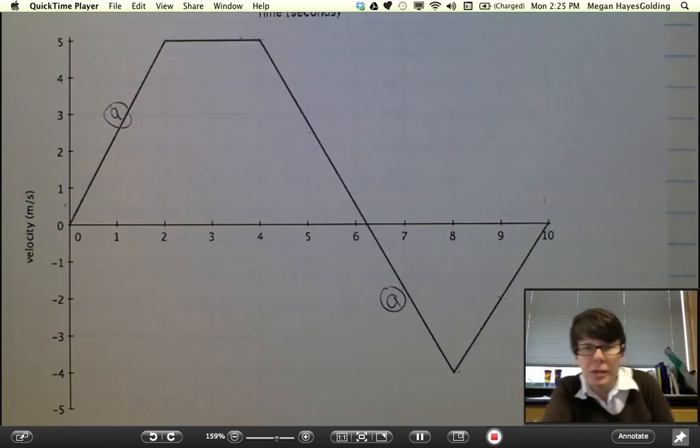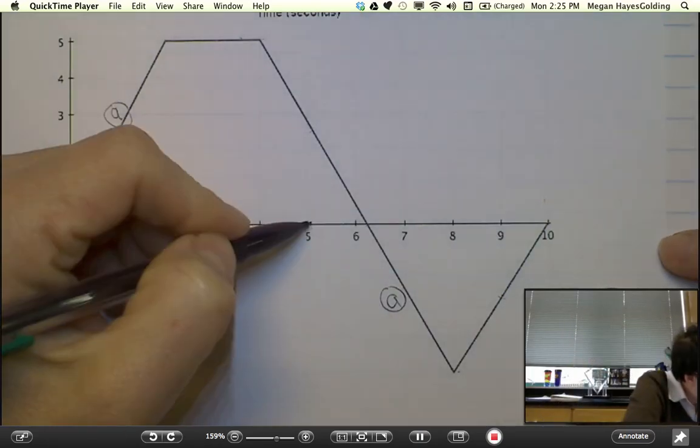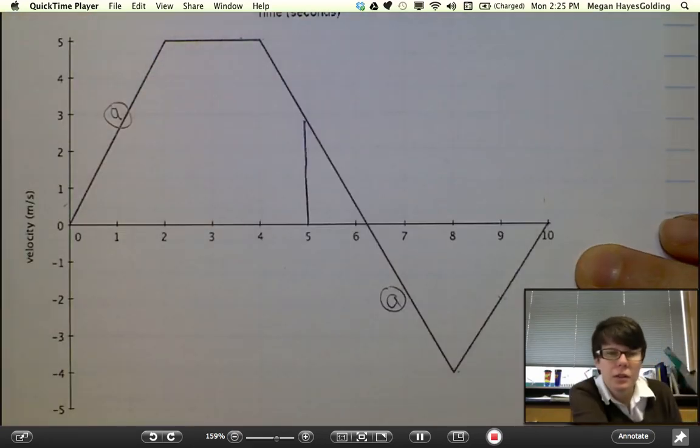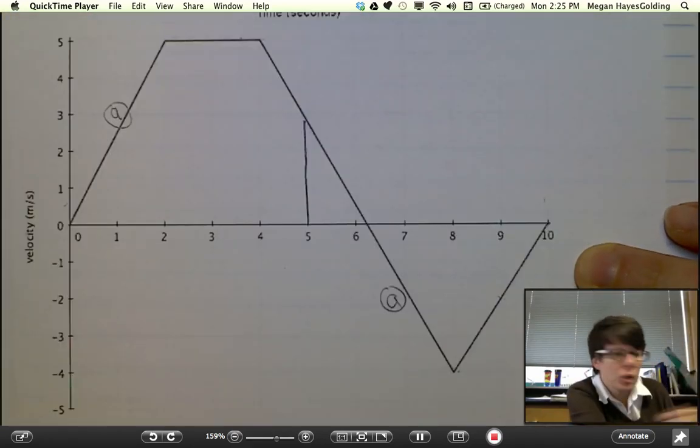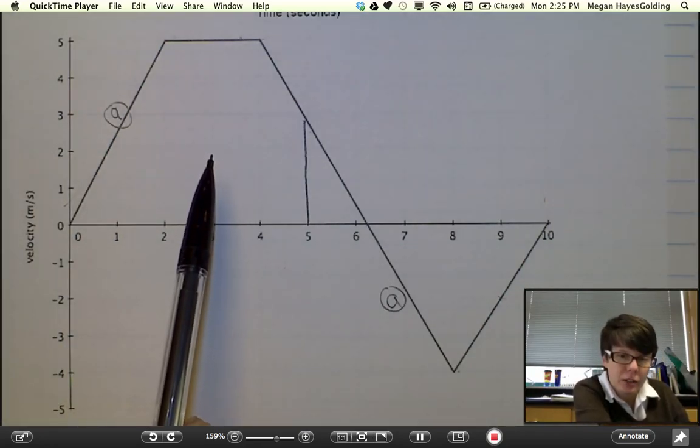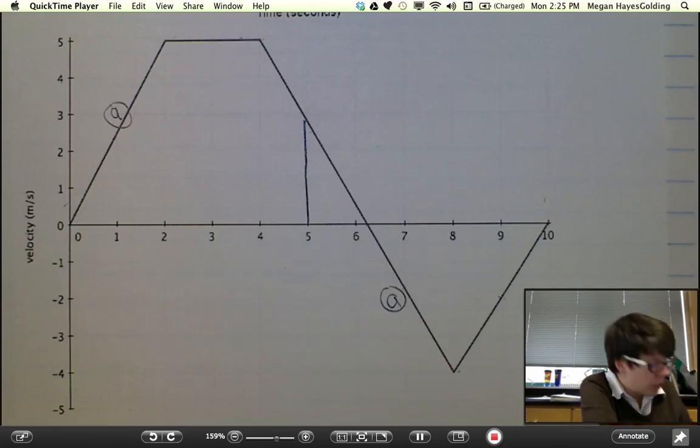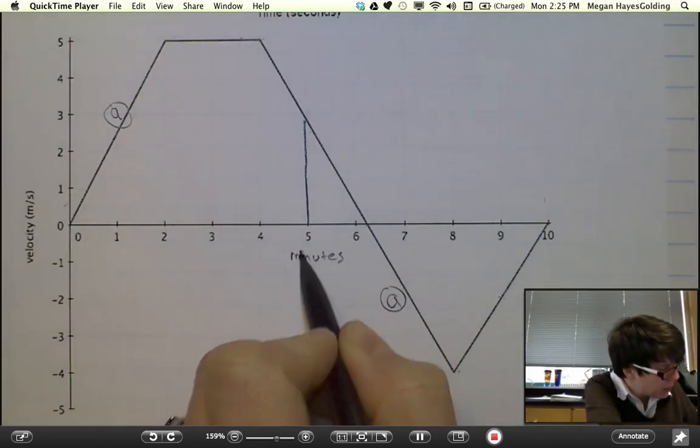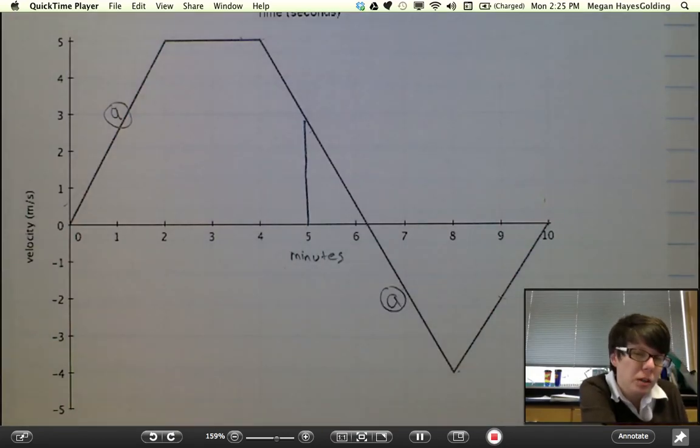Let's find 5 minutes on the graph here. And let's recall that on a velocity time graph, I want to find the area under the curve. Let me make one note here. This is in minutes. 5 minutes should be converted to seconds before attempting this problem.